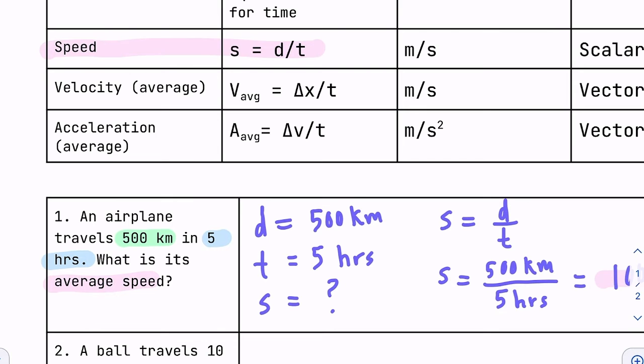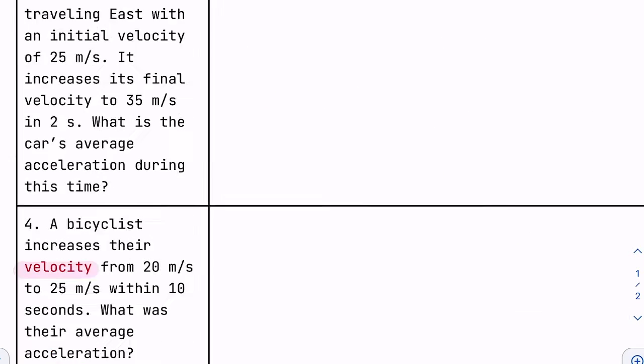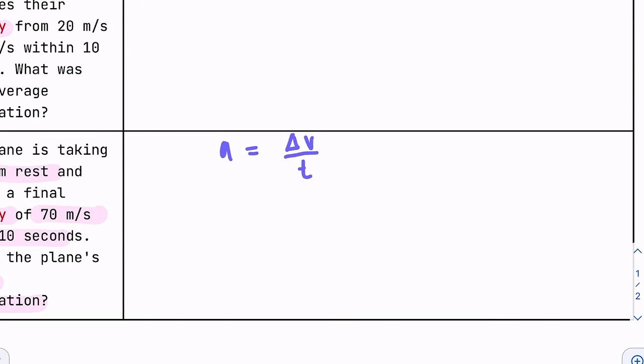We're looking for average acceleration, and the equation that I have written down is delta V over T. So let me rewrite that. Delta V means change in velocity, and that is calculated by taking the final velocity subtracting the initial velocity, so VF minus VI over time. That is our equation. I'm going to erase this to give myself some more room. And this is the average acceleration.